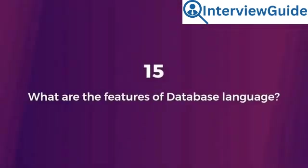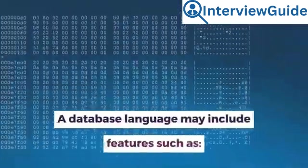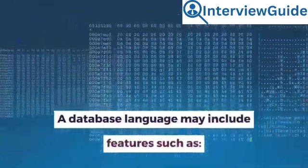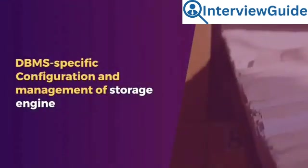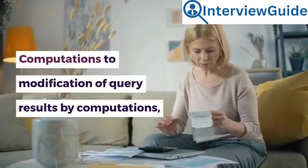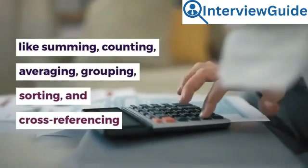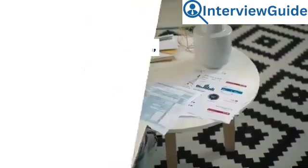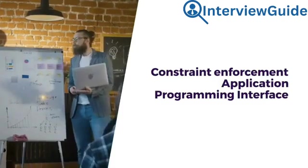Question 15: What are the features of database language? Sample answer: A database language may include features such as DBMS-specific configuration and management of storage engine, computations to modification of query results by computations like summing, counting, averaging, grouping, sorting, and cross-referencing, as well as constraint enforcement and application programming interface.